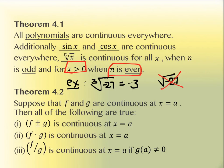Theorem 4.2 should feel very familiar — it's just talking about continuity instead of limits. It tells you that if you have individual functions that are continuous at x equals a and you add, multiply, or divide them, they remain continuous. The caveat on division is that the denominator cannot be 0. This is almost a corollary to the theorem we had before about limits, just applied to continuity.